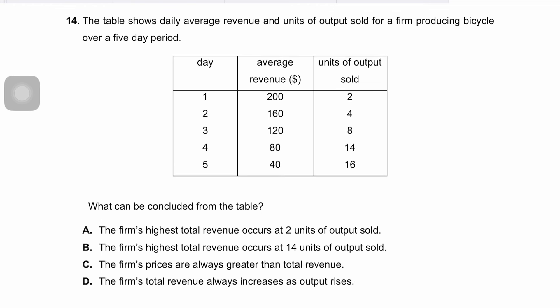Question fourteen: the table shows daily average revenue and units sold over a five-day period. Total revenue equals average revenue multiplied by units sold. Calculating for all five days: 800, 640, 960, 1120, and 640. The highest total revenue occurs at 1120 dollars, corresponding to 14 units of output. The correct answer is B.